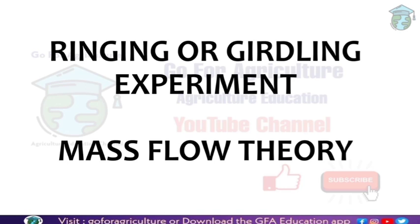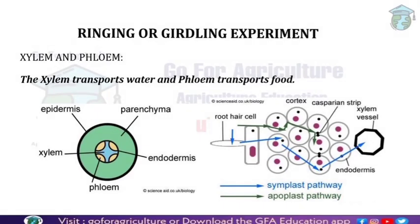First is the ringing or girdling experiment. This experiment basically explores the use of phloem — if we remove the phloem from the plant, what will happen? Before starting, you should know what xylem and phloem are. Xylem helps in transportation of water, and phloem helps in transportation of food. The arrangement from outside inward is: epidermis, parenchyma, endodermis, then phloem on the outside and xylem on the inside.